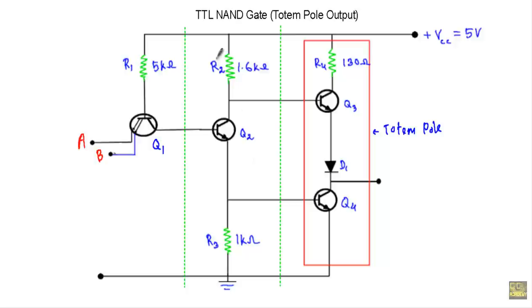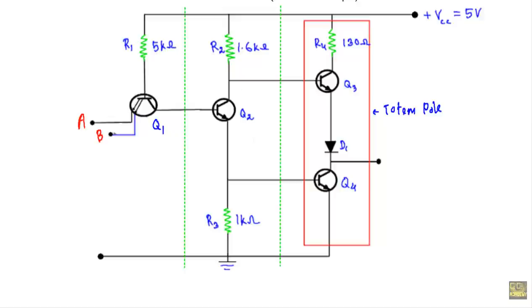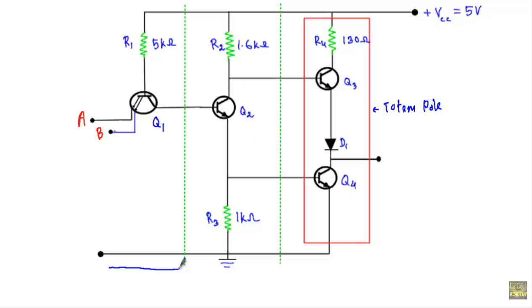This is the circuit structure of the TTL NAND gate. We can divide the total circuit schematic into three different segments: this side is known as the input segment or input stage, this side is known as the phase splitter stage, and this side is known as the output stage.